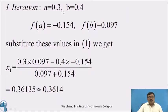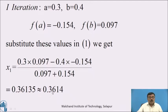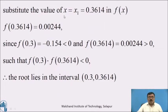First iteration: here a = 0.3 and b = 0.4, and f(a) = −0.154, and f(b) = 0.097. Substituting these values in equation 1 and simplifying, we get x₁ = 0.3614. Substituting x = x₁ = 0.3614 in f(x), it becomes f(0.3614) = 0.00244, which is positive.